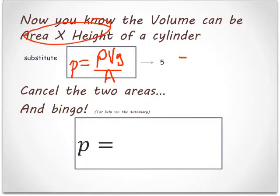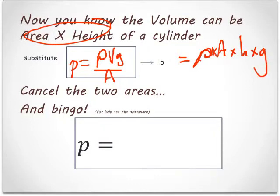So it could also be equal to density, that's a rho, area times height times gravity, all divided by area. Cancel the areas and then you could get rho gh.